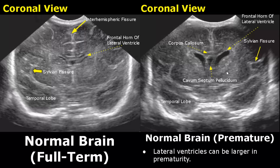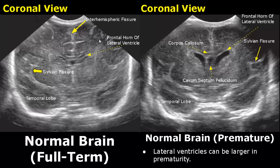This line is the sylvian fissure and below that is the temporal lobe on both sides. Over here is an image of a normal brain in a premature infant. They usually have larger lateral ventricles as compared to full-term infants. Another difference is the prominence of sulci — premature infants have fewer sulci seen on ultrasound, whereas a full-term infant has more prominent sulci.